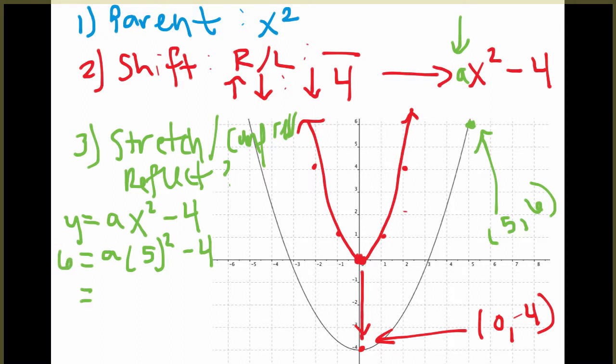If I solve this, I'll simplify the 5 squared. I get 25a minus 4 equals 6. And then if I add 4 to each side, I get 10 equals 25a. And then if I were to solve that for a, 10 divided by 25, you can leave it as a fraction but simplify the fraction, or you can do it as a decimal. But I would get a equals 0.4. So what that means is my final equation in this case would be y equals 0.4x squared minus 4.